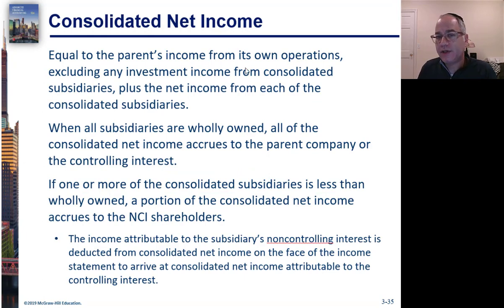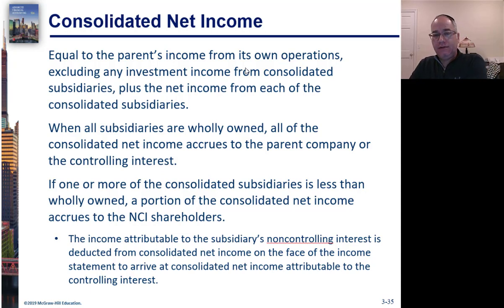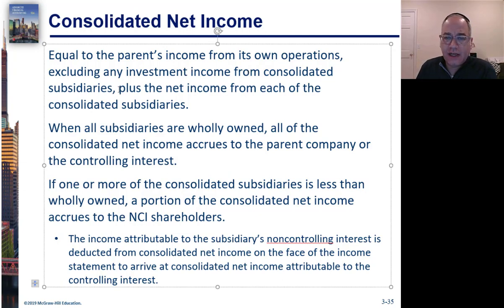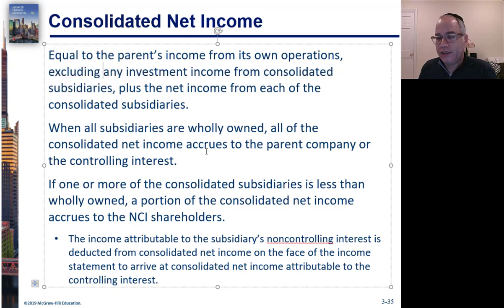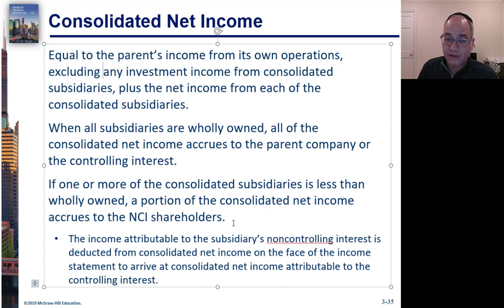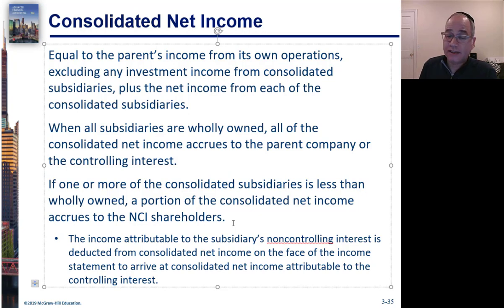Net income is going to equal the parent's income from its own operations plus the net income from all of the consolidated subsidiaries. This equity method income from consolidated subsidiaries gets excluded later. So if you own all of your subsidiaries, all the net income of the sub just gets added in with the parent's. But if one of the subsidiaries has a non-controlling interest, then a portion of that income needs to be allocated to the non-controlling interest and subtracted from consolidated net income.